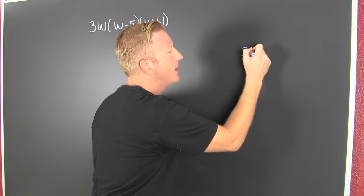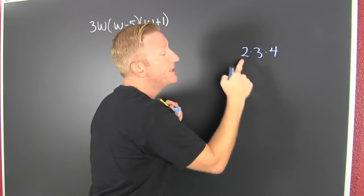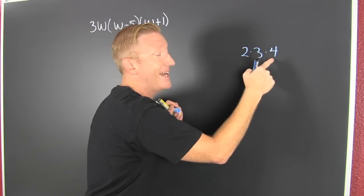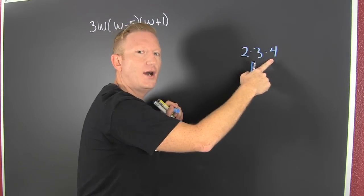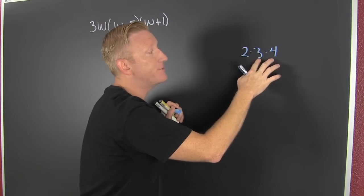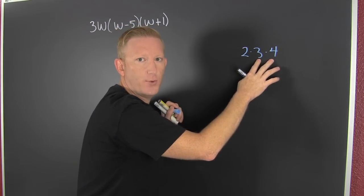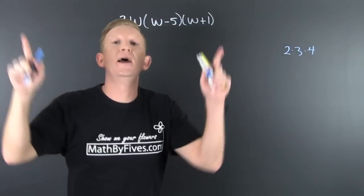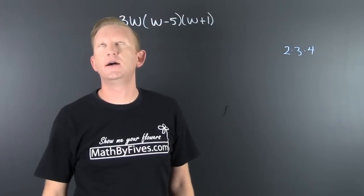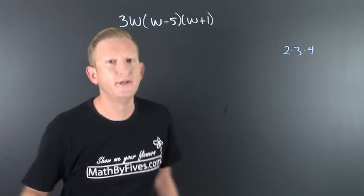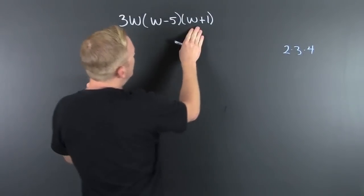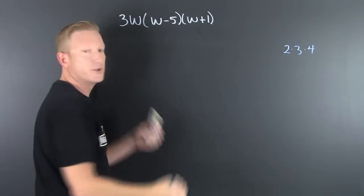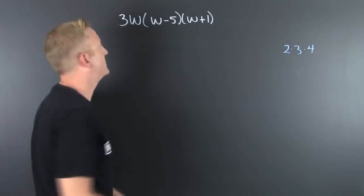If you had two times three times four, does the two multiply by the three and the four? No. It multiplies by the twelve to get twenty-four. It only multiplies by one of those. So to lessen the confusion, I'm going to multiply out the binomial times binomial. So I'm going to do first, inner, outer, last.